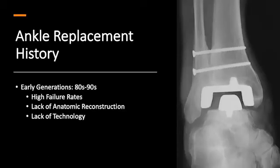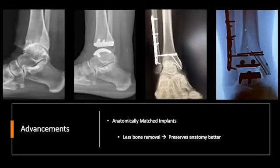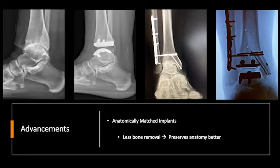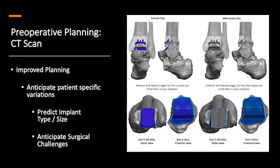The history of ankle replacements: early generations had higher failure rates, lacked anatomic reconstruction, and our technology just wasn't there. However, as we've advanced, these implants have become significantly better. The anatomy is matched better to improve gait and biomechanics, and we've been able to remove less bone, which preserves anatomy, allows for revision cases, and lets us provide these implants without a big fusion. This has really allowed us to advance our indications and the patients who can receive these implants, allowing them to last longer and improving gait.